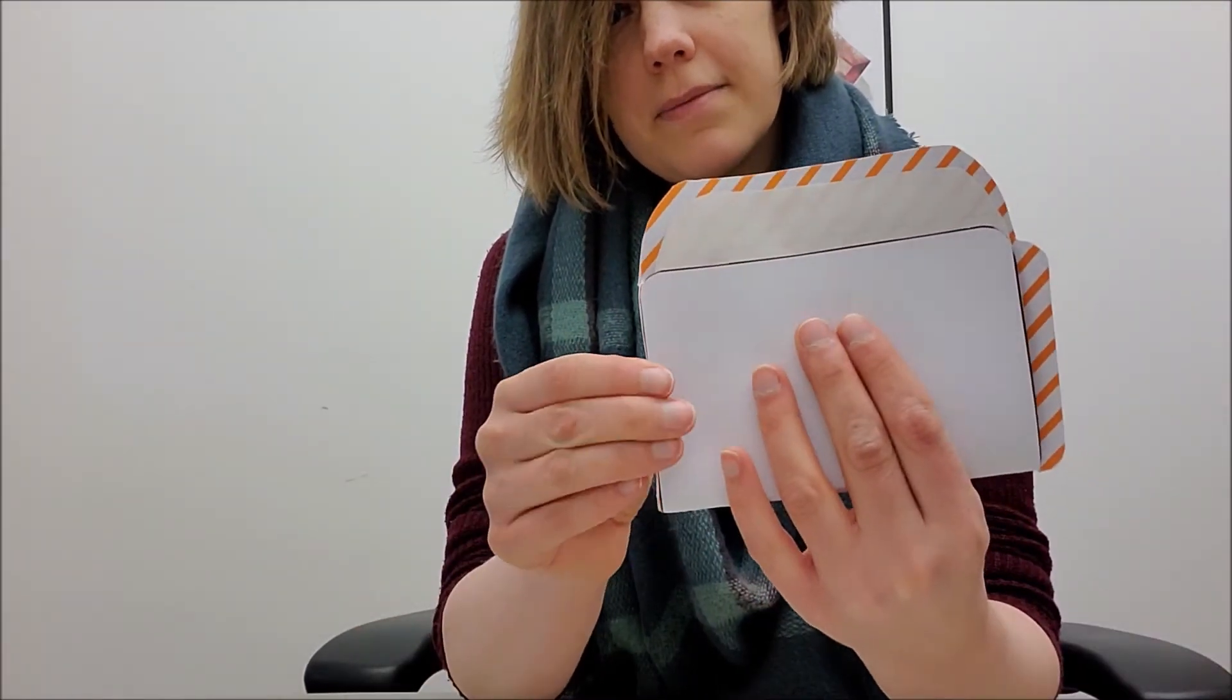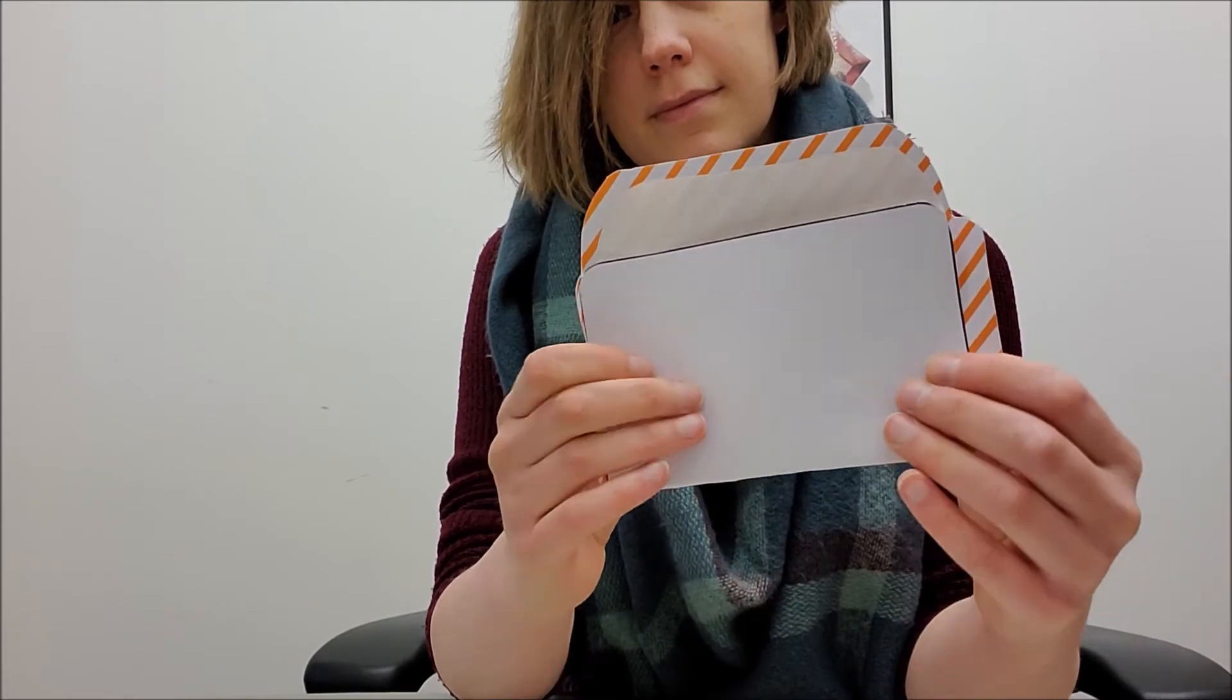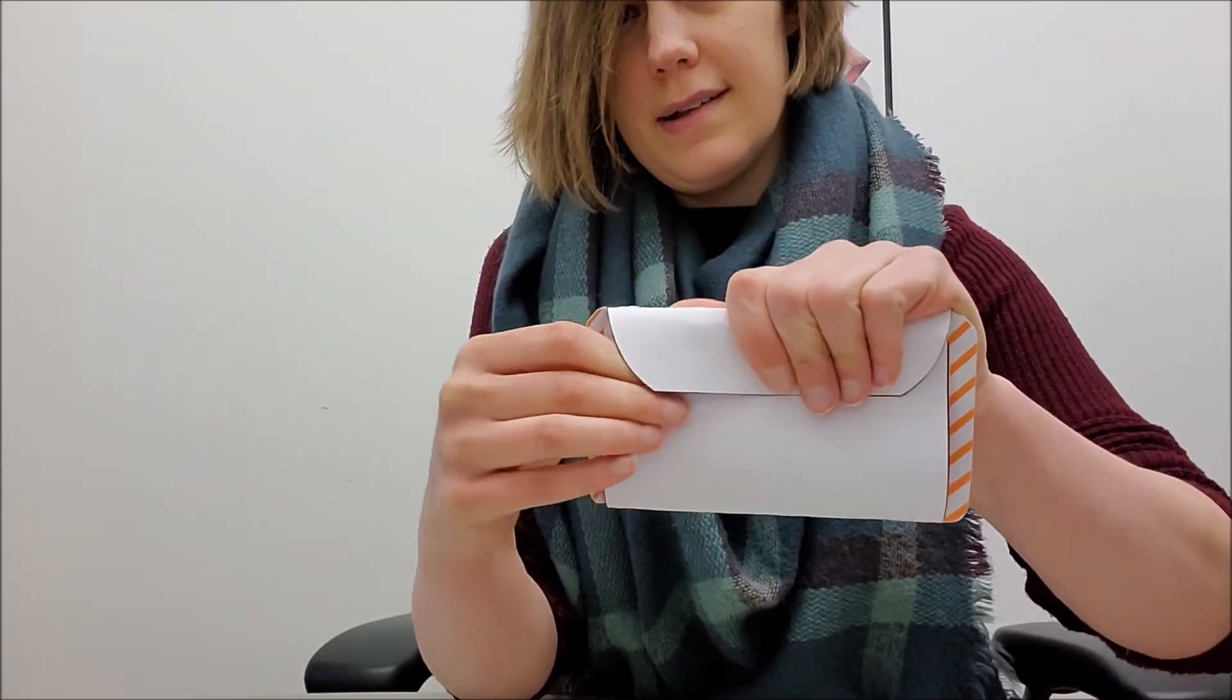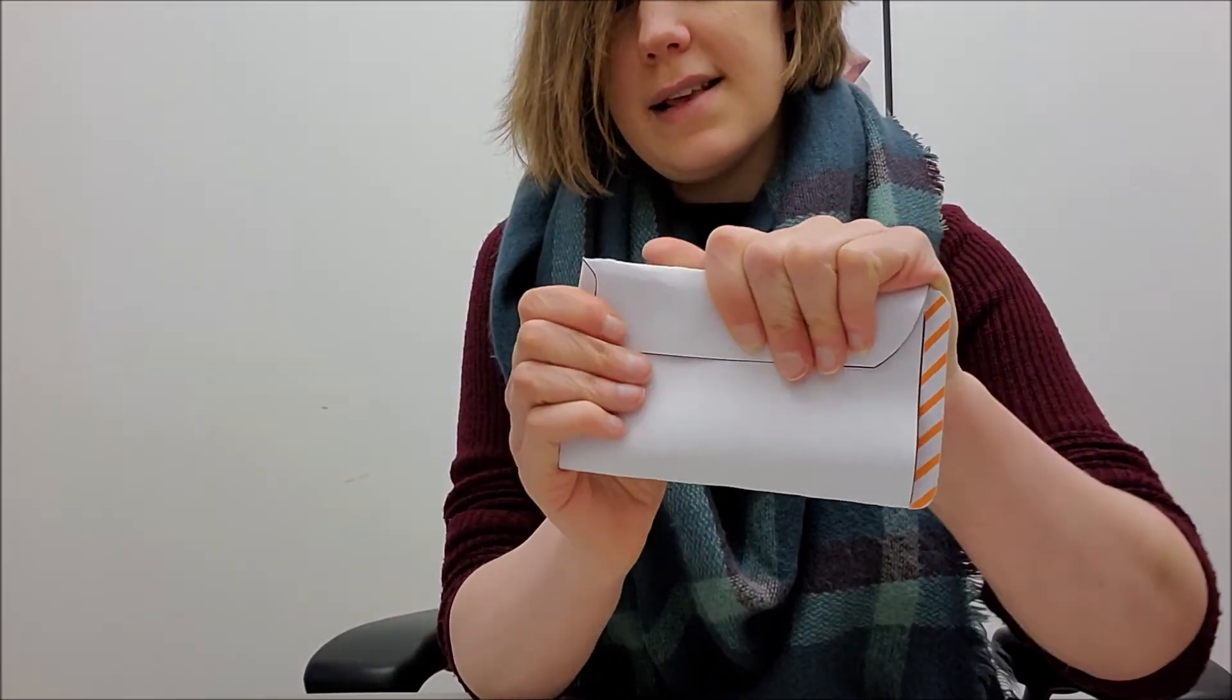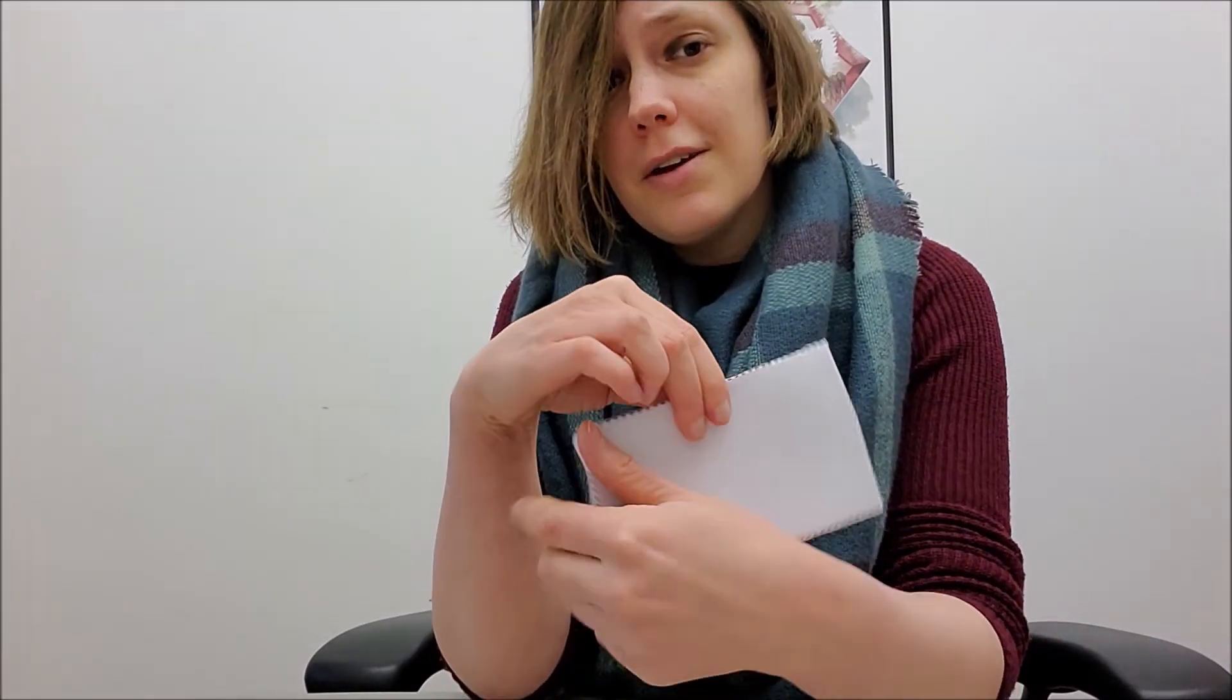So now when we fold it up, and then fold it down, and then these tabs fold in. And if you want, you can use some washi tape, some stickers, or just some regular tape to seal up your envelope. Then there's the outside and you can drop it in the mail.